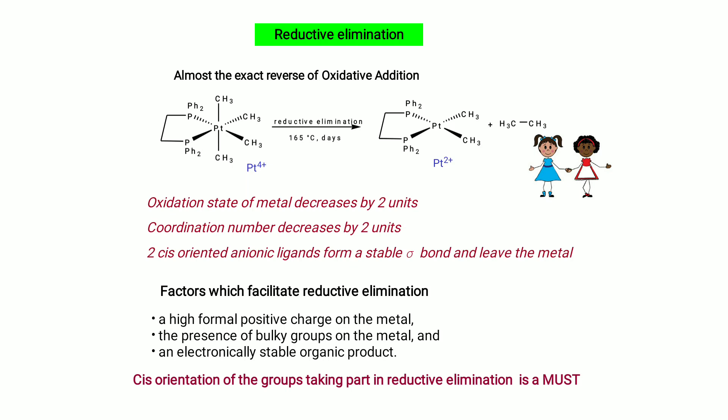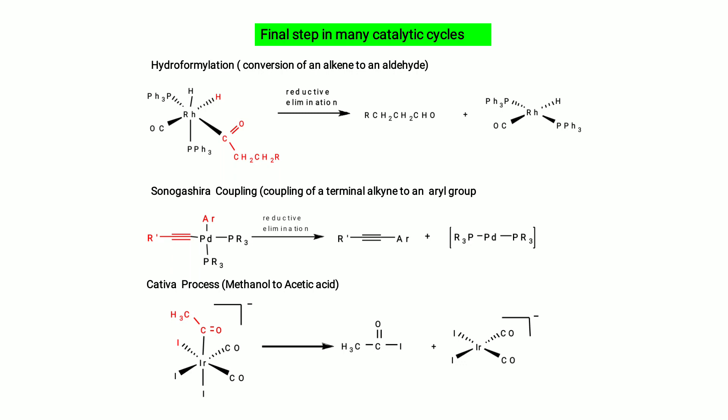Reductive elimination is almost the exact reverse of oxidative addition. The oxidation state of the metal decreases by two units, coordination number decreases by two units, and two cis-oriented anionic ligands form a stable sigma bond and leave the metal. Factors facilitating reductive elimination: positive formal charge on the metal, bulky groups on the metal, and electronically stable organic product. Cis orientation of the groups is a must. Applications: final step in hydroformylation (alkyne to aldehyde), Sonogashira coupling (terminal alkyne to aryl group), and Cativa process (methanol to acetic acid).